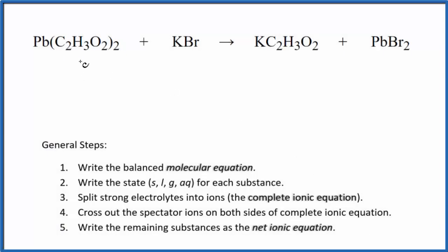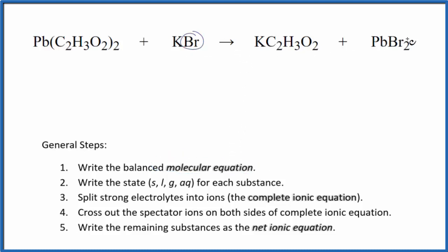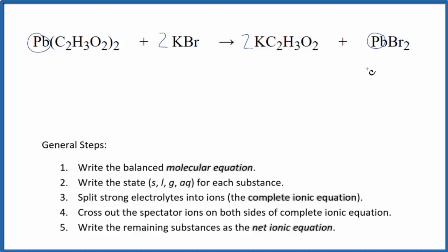In this video, we'll write the balanced net ionic equation for lead 2 acetate plus potassium bromide. For net ionic equations, the first thing we do is balance the molecular equation. There's one bromine here and two of them on the other side, so we put a 2 there. Now we have two potassium atoms, so we put a 2 there. The acetate ions are balanced — we have two of those on each side — and one lead on each side. So we've balanced the molecular equation.